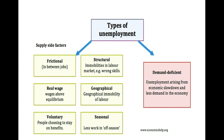Frictional unemployment is the most common form. It arises for a particular time period when people are looking for jobs or switching from one job to another. It is more of a voluntary unemployment, also called search unemployment — it refers to the lag between jobs when an individual is searching for a new job or switching between jobs. This inevitable time delay causes frictional unemployment. It is often considered voluntary because it is not caused by a shortage of jobs, but rather workers quit their jobs in search of better opportunities.